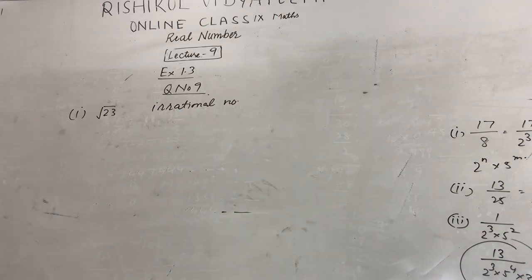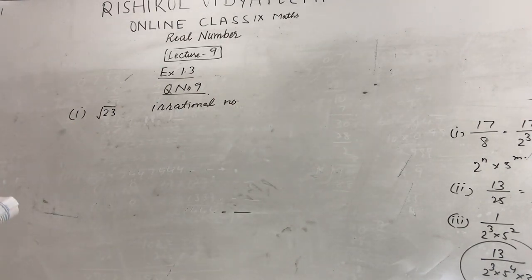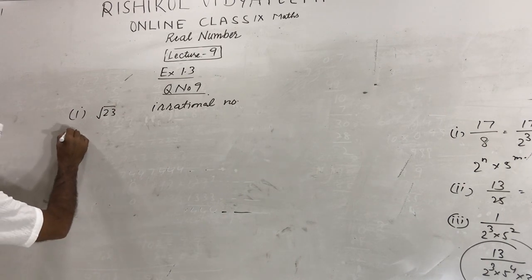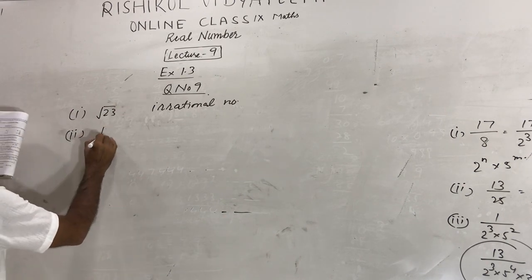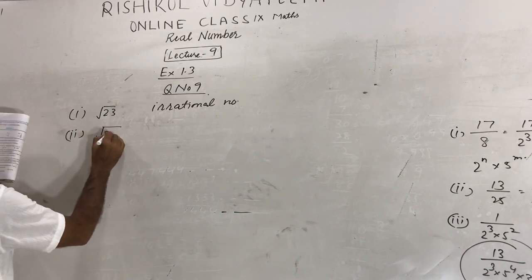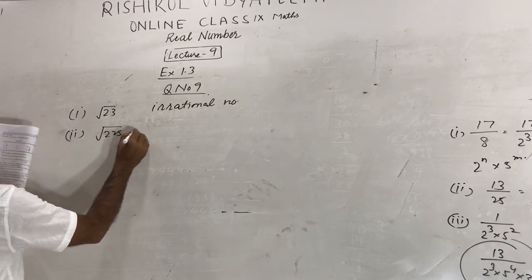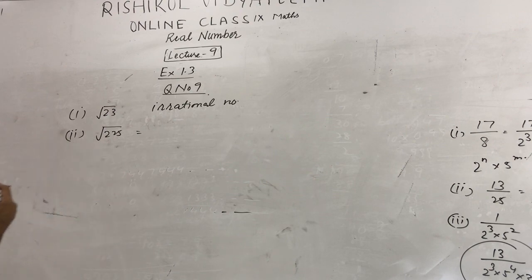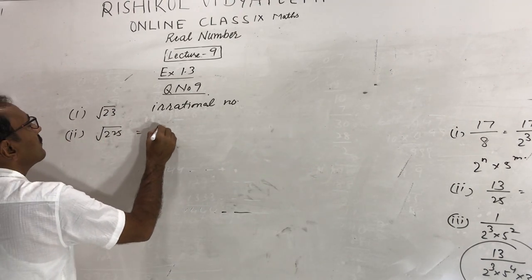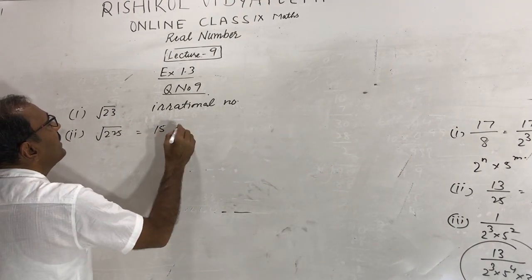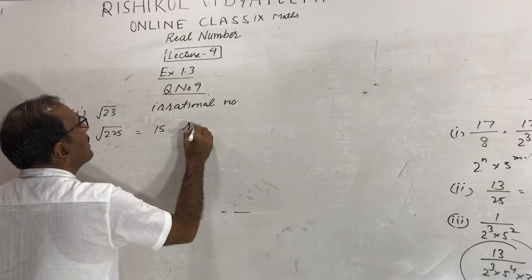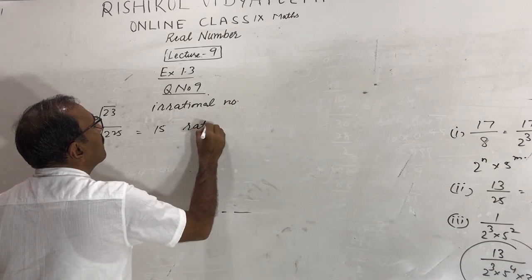√25 equals 5, so it is a rational number. Then √225: the square root of 225 is 15, and 15 is a rational number.